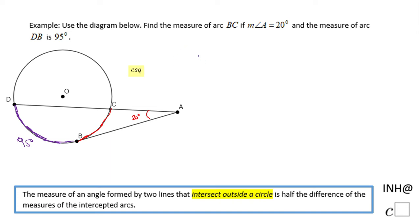So in our case the measure of angle A is going to be half the difference of the measure of the intercepted arcs which are DB and BC.